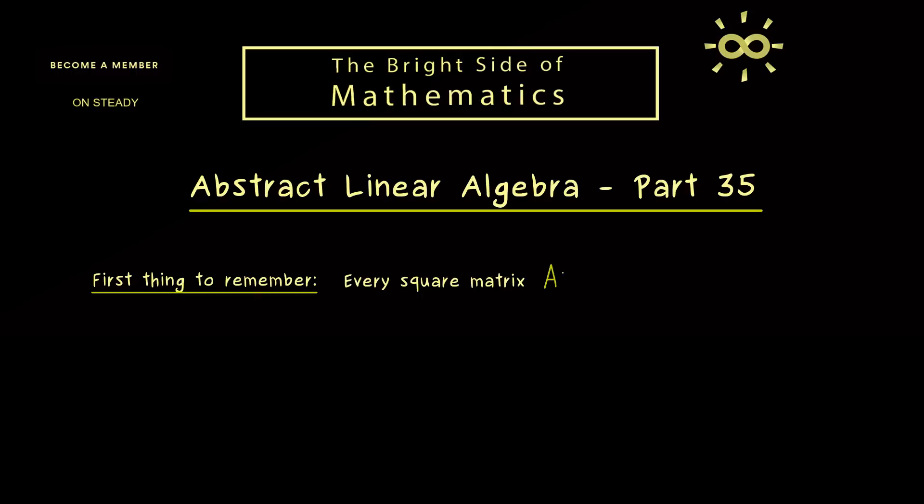Namely, every square matrix with complex entries can be transformed into a triangular matrix. More precisely, we would say A is similar to a triangular matrix. And we can say even more, because we can choose a very special triangular matrix, namely the so-called Jordan Normal Form.